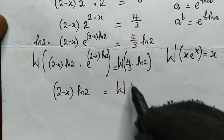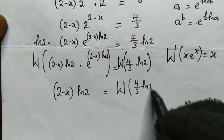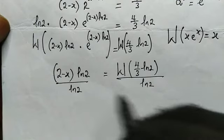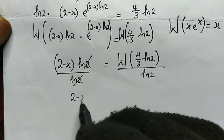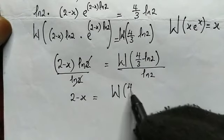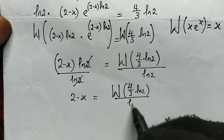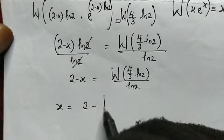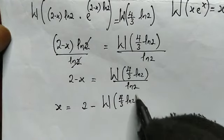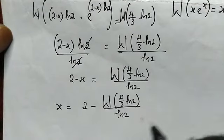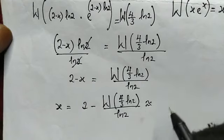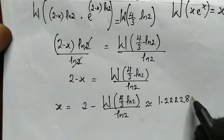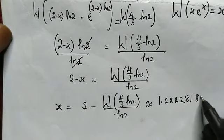So let us apply the Lambert W function to both sides of this equation. From the left, this simplifies to 2 minus x multiplied by the natural log of 2. Then this equals W of 4 divided by 3 multiplied by the natural log of 2. Dividing both sides by the natural log of 2, we get 2 minus x equals W(4/3 · ln 2) divided by the natural log of 2. So to solve for x: x equals 2 minus W(4/3 · ln 2) divided by the natural log of 2, which is approximately equal to 1.222281837.